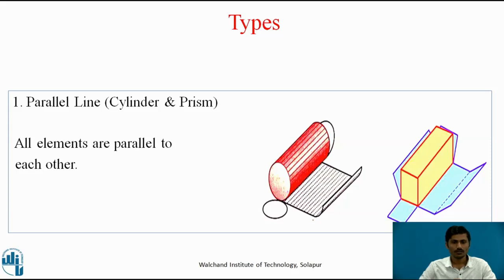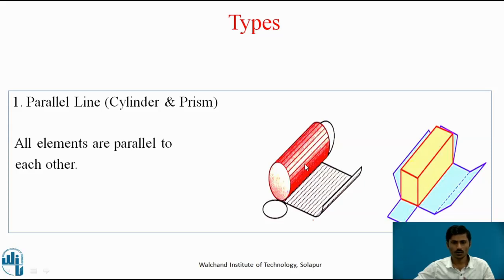In the first method, cylinders and prisms will be done. This figure is called a cylinder and this one is called a prism. A cylinder has an external surface as a curved surface, and we have imaginary lines on the cylinder surface called generators or elements. We need to keep a cylinder on the development plane so that one element is on the development plane, and then unroll the cylinder surface so that all the elements or generators are on the development plane. That will be the development of the lateral surface of the cylinder. In that figure, we get all elements parallel to each other, so it is called the parallel line method.